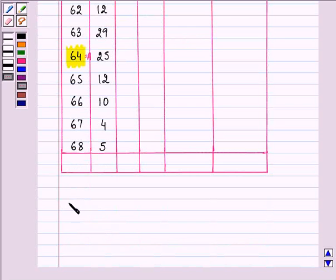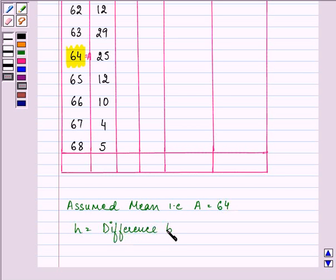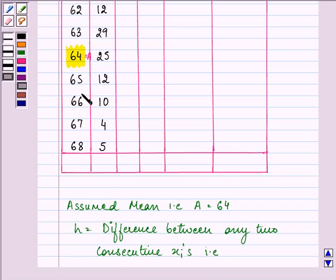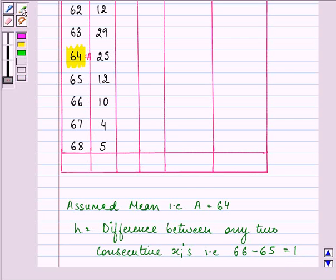So what we have done here is we have assumed mean that is A equal to 64 and h is the difference between any two consecutive xi's. That is if you subtract any one, that is 66 minus 65, it is coming out to be 1. So here we have A is equal to 64 and h is equal to 1.